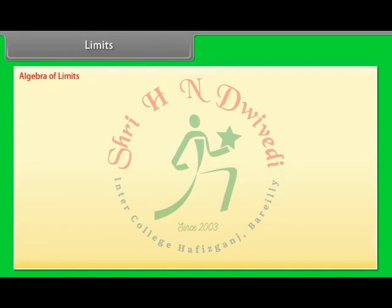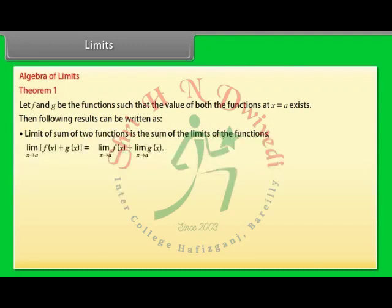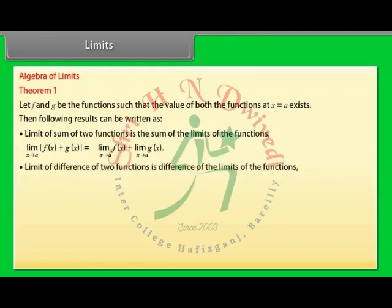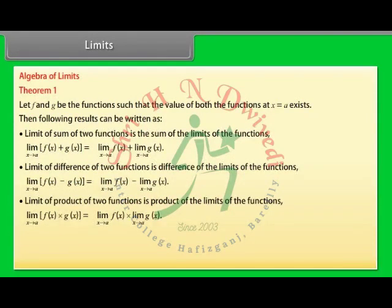Algebra of Limits — Theorem 1: Let f and g be functions such that the value of both functions at x = a exists. Then: the limit of the sum of two functions is the sum of the limits — limit x→a of [f(x) + g(x)] = limit x→a of f(x) + limit x→a of g(x). The limit of the difference is the difference of the limits — limit x→a of [f(x) − g(x)] = limit x→a of f(x) − limit x→a of g(x). The limit of the product is the product of the limits — limit x→a of [f(x)·g(x)] = limit x→a of f(x) × limit x→a of g(x).